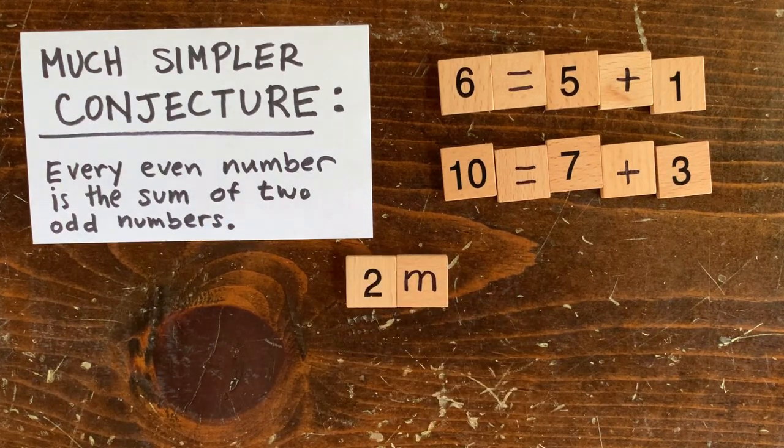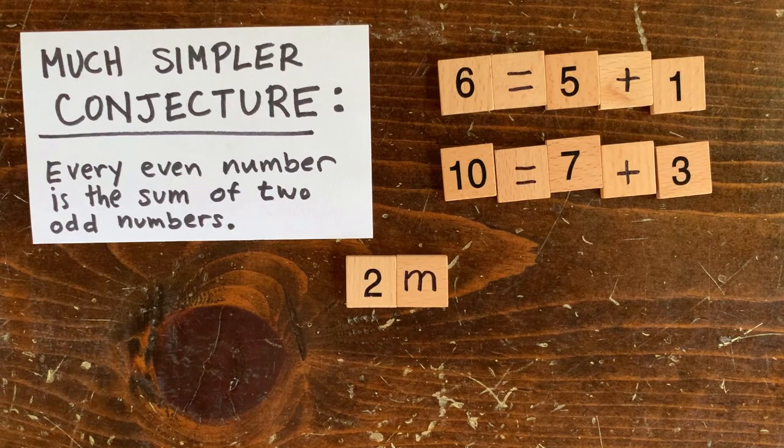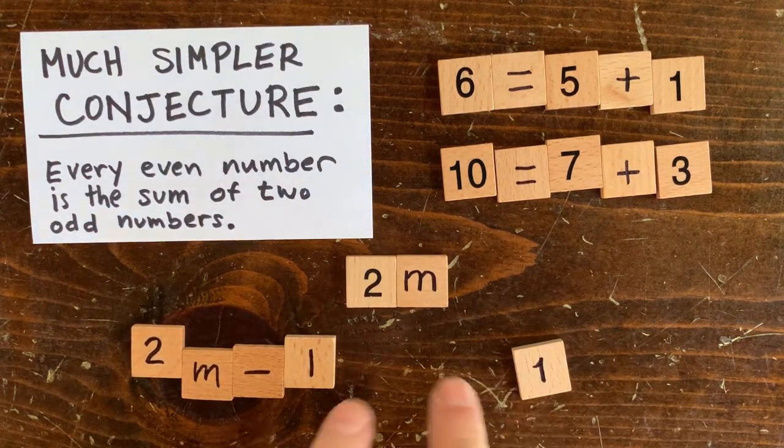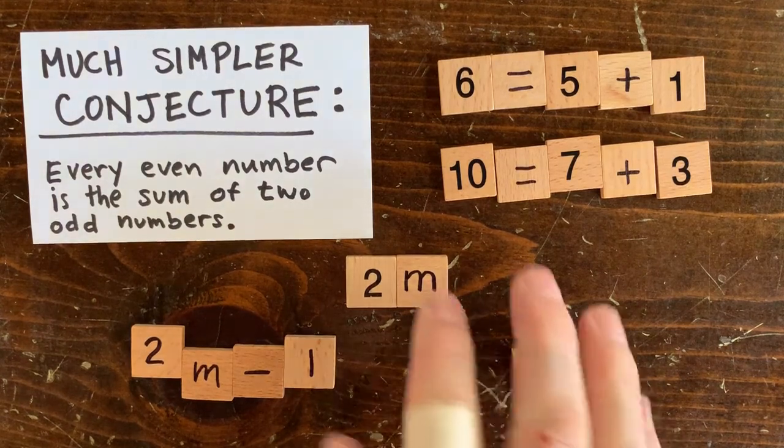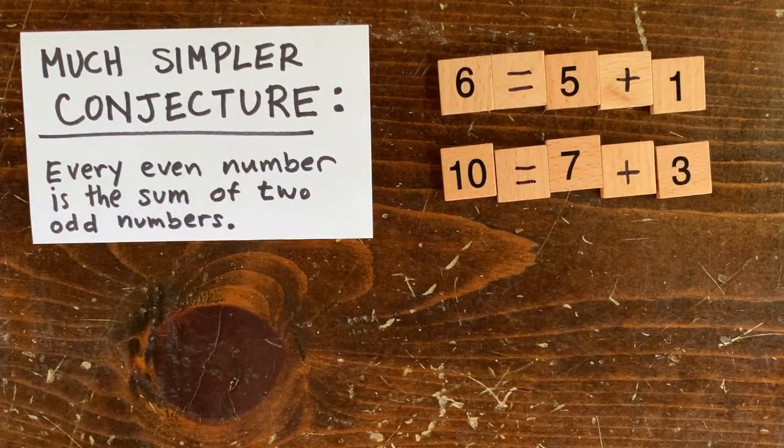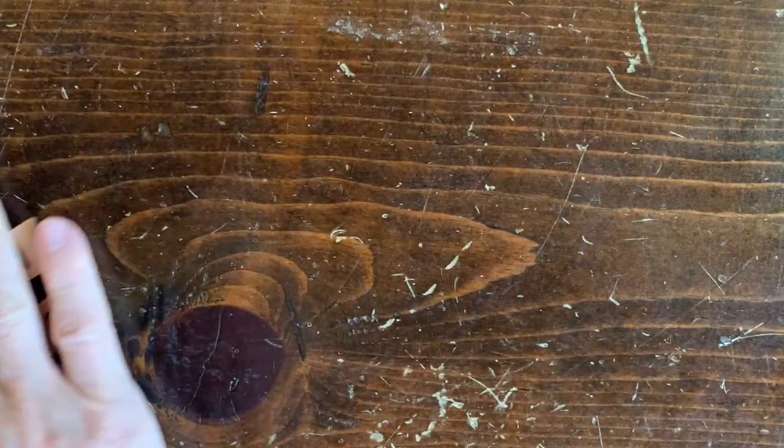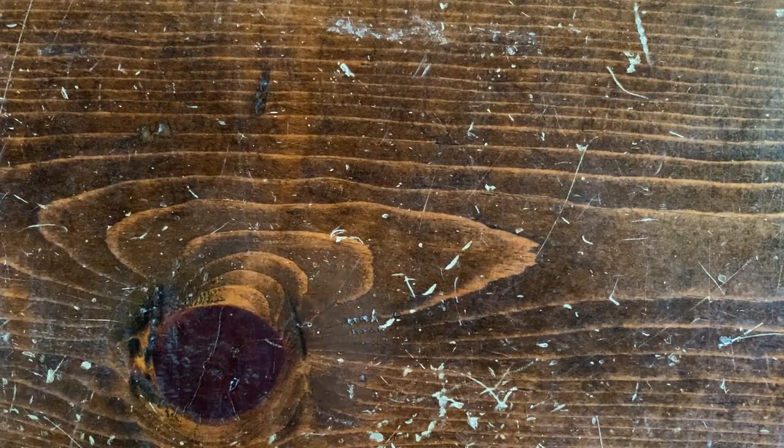Now, let's construct two numbers, 2m minus 1 and 1. These are both odd, and if we add them together, we get 2m. So that's an airtight argument. No matter how huge an even number you give me, I know it's going to be the sum of two odd numbers. So the first way to resolve the 3n plus 1 conjecture is to make a proof like that.